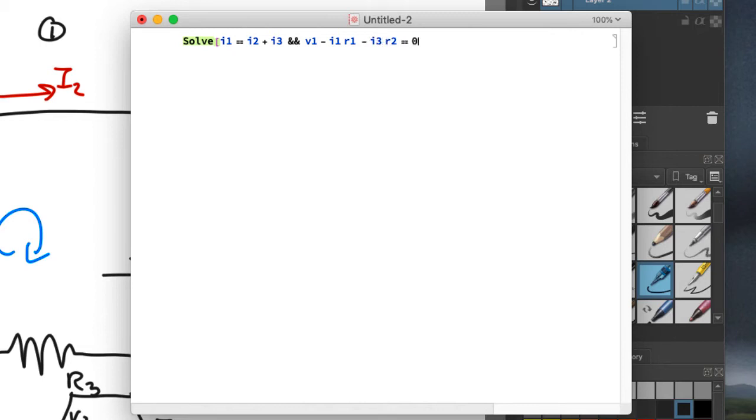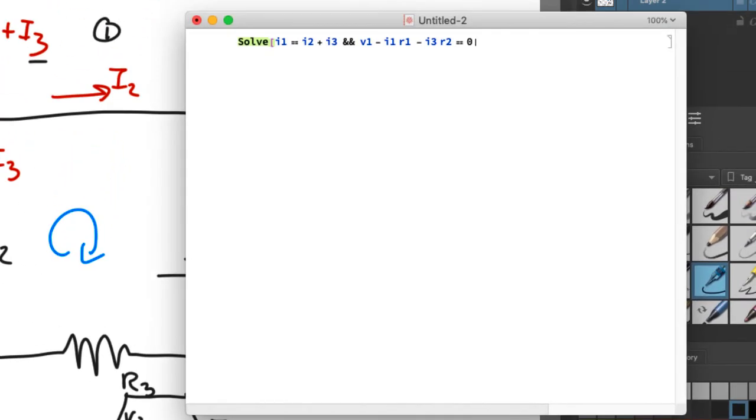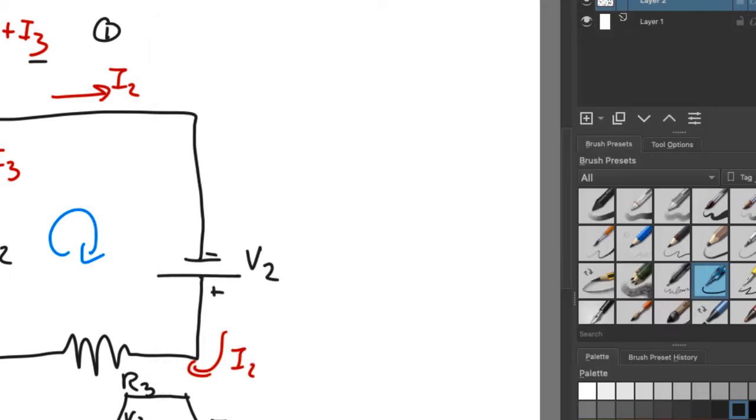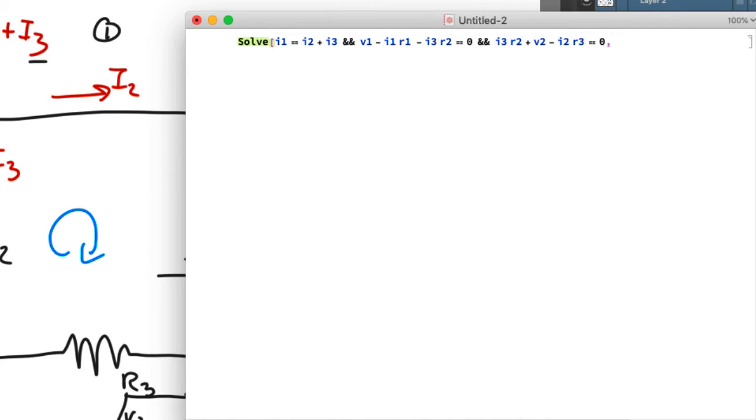And I've got another equation over here: V1 minus I1 R1 minus I3 R2 equals 0. And we've got another equation so double and again and now let's have this equation, I3 R2 plus V2 minus I2 R3 equals 0.